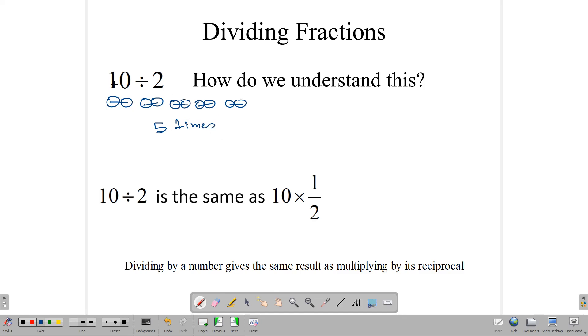Now suppose we rewrite our 10 divided by 2 using a fraction bar. So let's write 10 divided by 2 as 10 over 2. Now this 10 over 2 can be further rewritten as 10 times 1 over 2. So 10 divided by 2 is the same thing as 10 times 1 over 2, which of course is 5. Here it's saying 10 halves, and here it's saying 10 divided by 2. And 10 halves make 5.